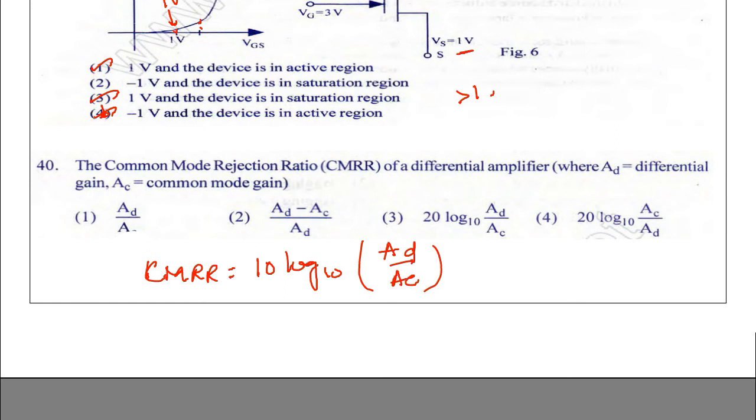Here if it's 10 log, the answer would be correct, but it's 20 so this is wrong. We can say 10 log 10 is equal to 1, so 1 times A_d by A_c is the answer. Option 1 is correct. Thank you friends, thank you for watching my videos, have a nice day.